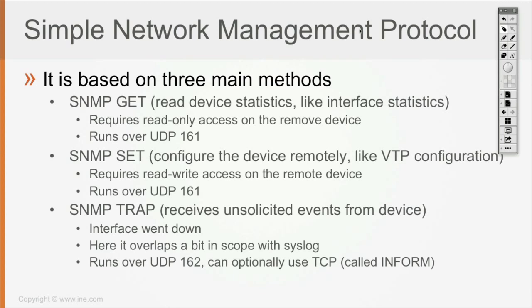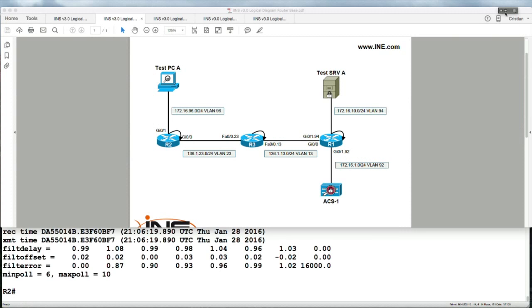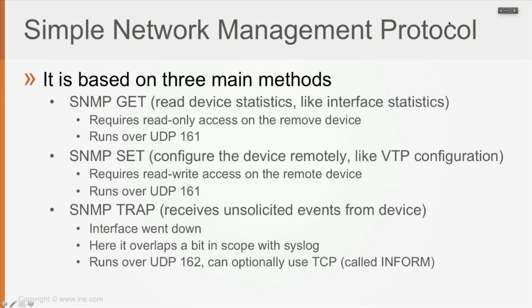We also have the SNMP SET, which is an action initiated by the SNMP manager towards the SNMP agent in order to configure the agent remotely — for example, VTP configuration. This requires read-write access from the manager to the agent, because the manager is going to actually change the agent's configuration. Most commonly seen uses are VTP or VLAN configuration pushed remotely. This action likewise runs over UDP 161.